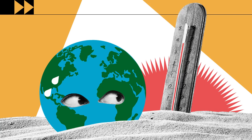Earth-orbiting satellites and other technological advances have enabled scientists to see the big picture, collecting many different types of information about our planet and its climate on a global scale. This body of data,